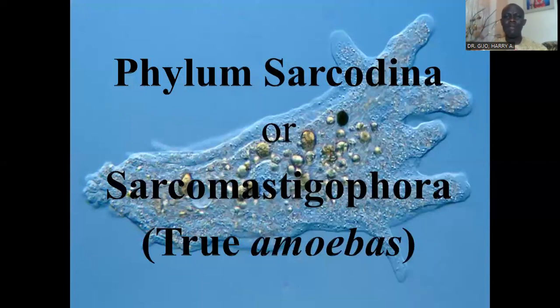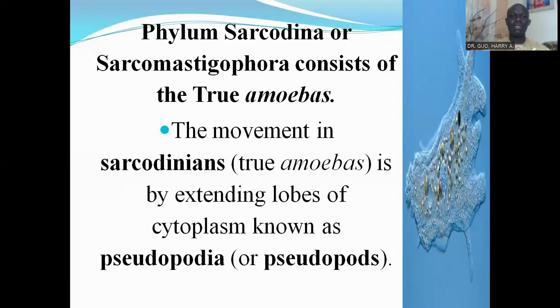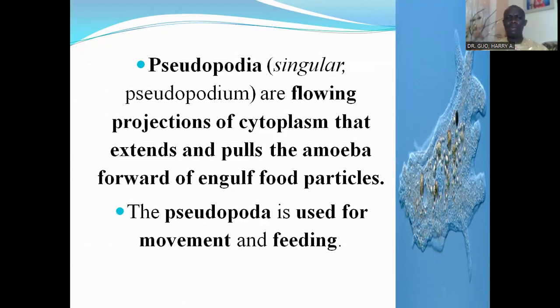Let us look at the phylum Sarcodina or Sarcomastigophora, which contains the true amoeba. Movement in sarcodines is by extending lobes of cytoplasm known as pseudopodia or pseudopods. The cytoplasm extends to form pseudopods. The pseudopodia are flowing projections of cytoplasm that extend and pull the amoeba forward to engulf food particles.